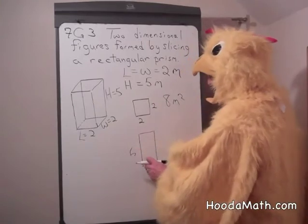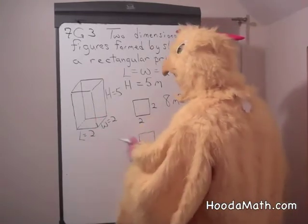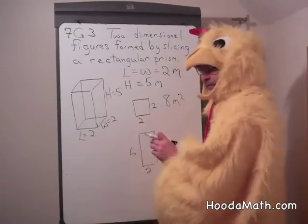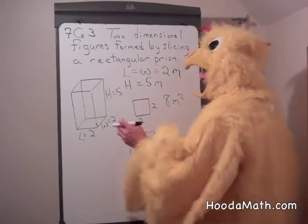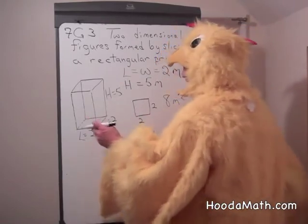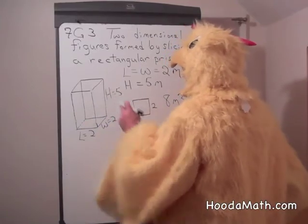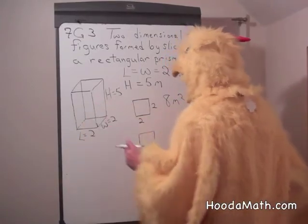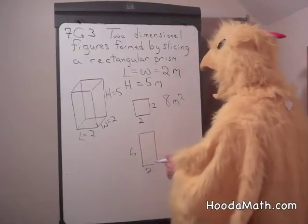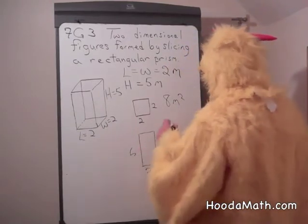And five times two is ten, and there's four identical faces on this particular rectangular prism. The front and the back are identical. The side is also two by five, so there's four of them. Five times two is ten, times four is forty.